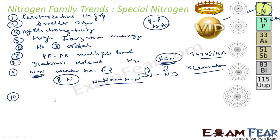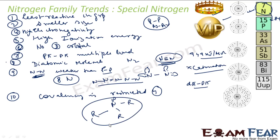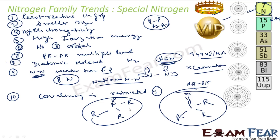The 10th unique property of Nitrogen is that its covalency is restricted to 4 — we have studied this. Covalency is restricted to 4 because there is no d orbital. Because of the absence of a d orbital, Nitrogen can't form d-pi p-pi bonds. That kind of bonding is not possible for Nitrogen. But for Phosphorus it is possible, because Phosphorus has a d orbital. So Nitrogen's maximum covalency is restricted to 4.